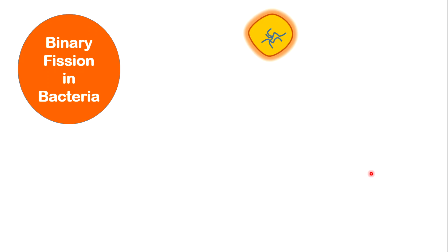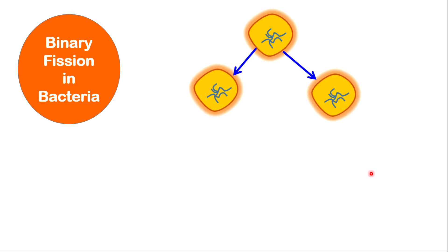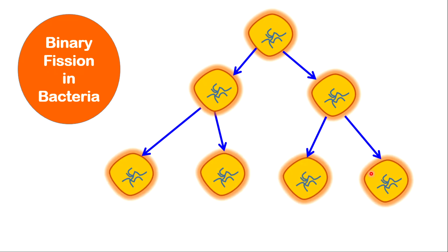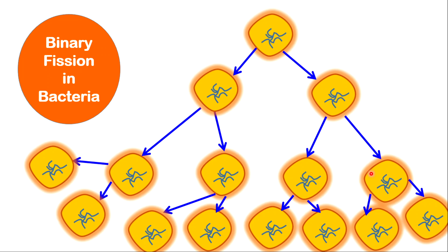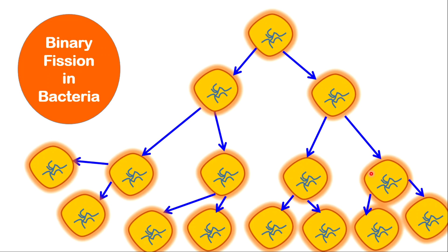Binary fission is where one cell splits into two new cells, as the word fission suggests — splitting. This type of reproduction is a kind of exponential growth in that it is rapid and very fast. One parent cell produces two new cells, each of those cells will further divide into two, and so on, giving you a very large population or colony in a very short period of time. This is a very popular type of reproduction among bacteria and some single-cellular organisms.